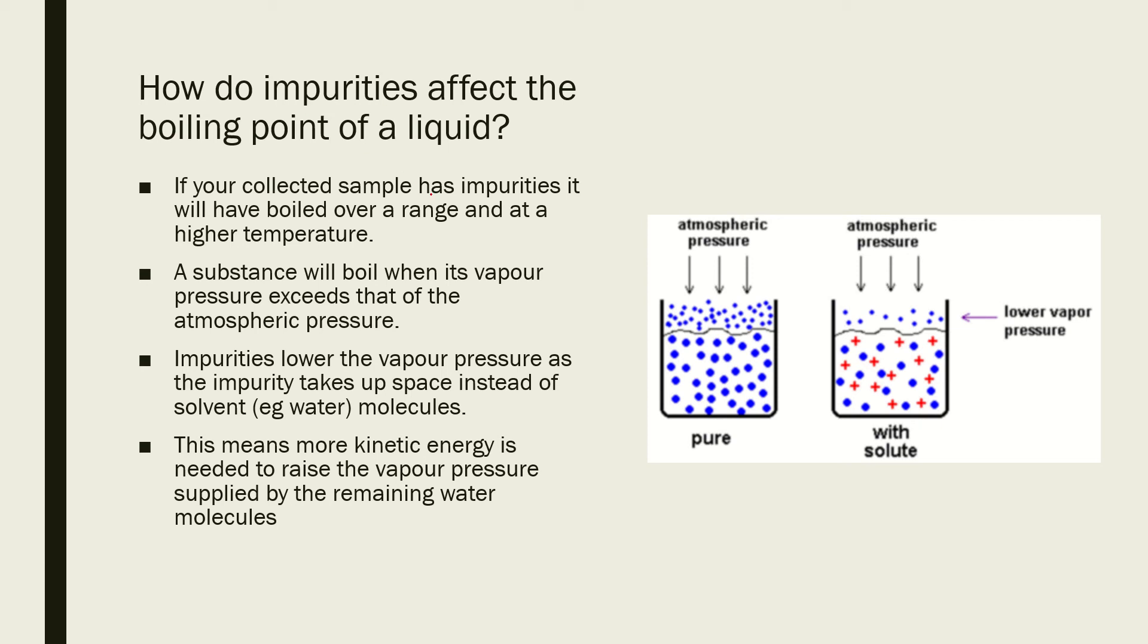As I said, impurities will give it a higher temperature and it will be over a range. What it's to do with is what's called vapor pressure.